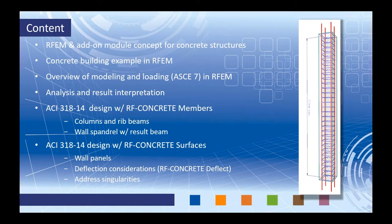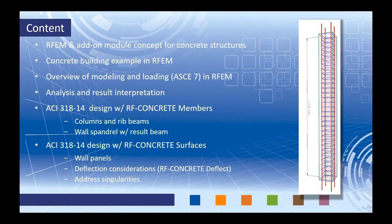There are design add-on modules implemented within RFEM. In particular, we'll be looking at RF Concrete Members today. This will allow us to design our columns and rib beams as well as a wall spandrel above an opening within a wall with result beams according to the ACI 318. Then we'll move on to the RF Concrete Surfaces module. This will allow us to do design of our wall panels as well as deflection considerations with the module extension RF Concrete Deflect. We can also address singularities which may occur within finite element software and how this impacts our concrete design of 2D surfaces.